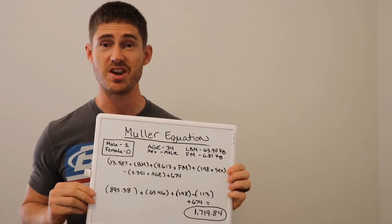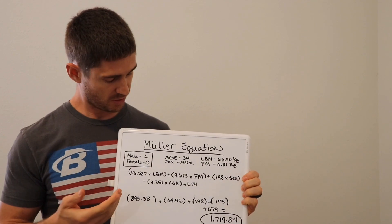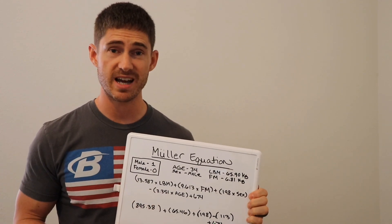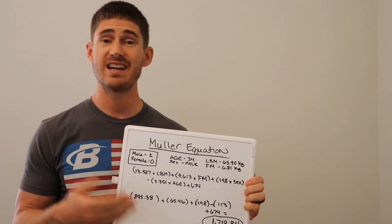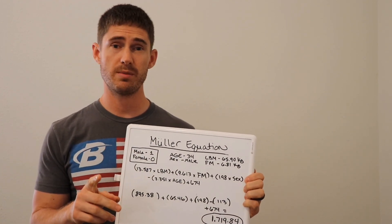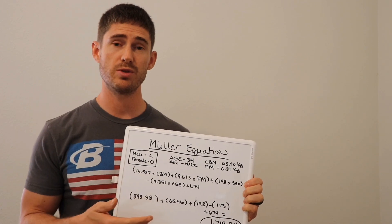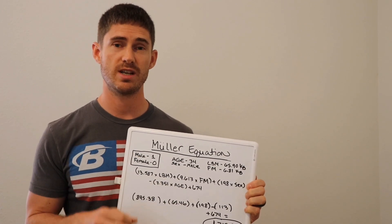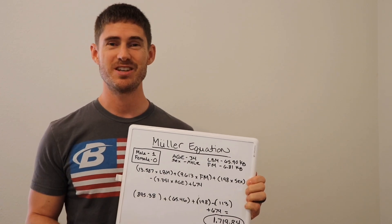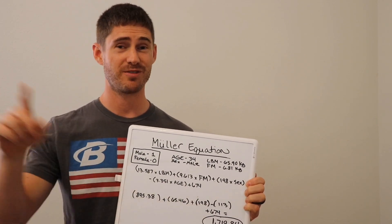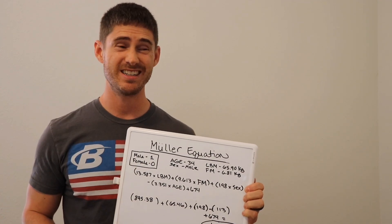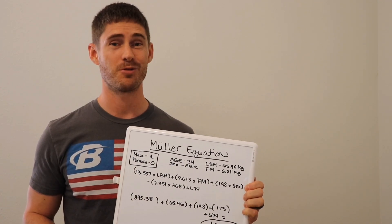As you can see here on the whiteboard, the Mueller equation takes into account your age, your lean body mass, your fat mass, and your gender. One important thing to remember when going through this equation is that your measurements need to be in kilograms, not pounds. If you put it in pounds, you're going to find that your BMR is very high, and if you try to start eating at that, you're probably going to gain a lot of fat real quick.